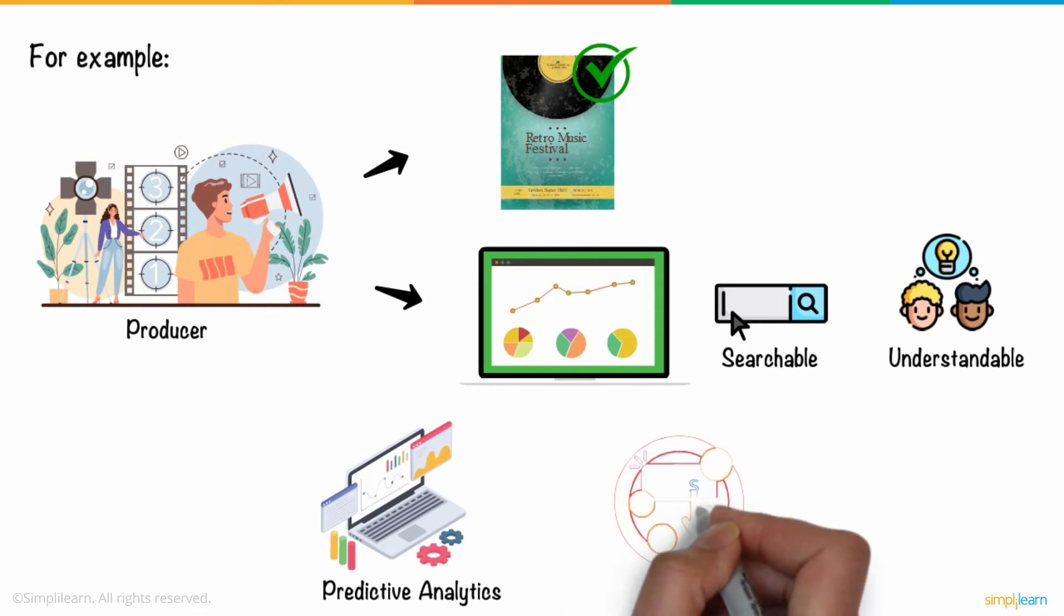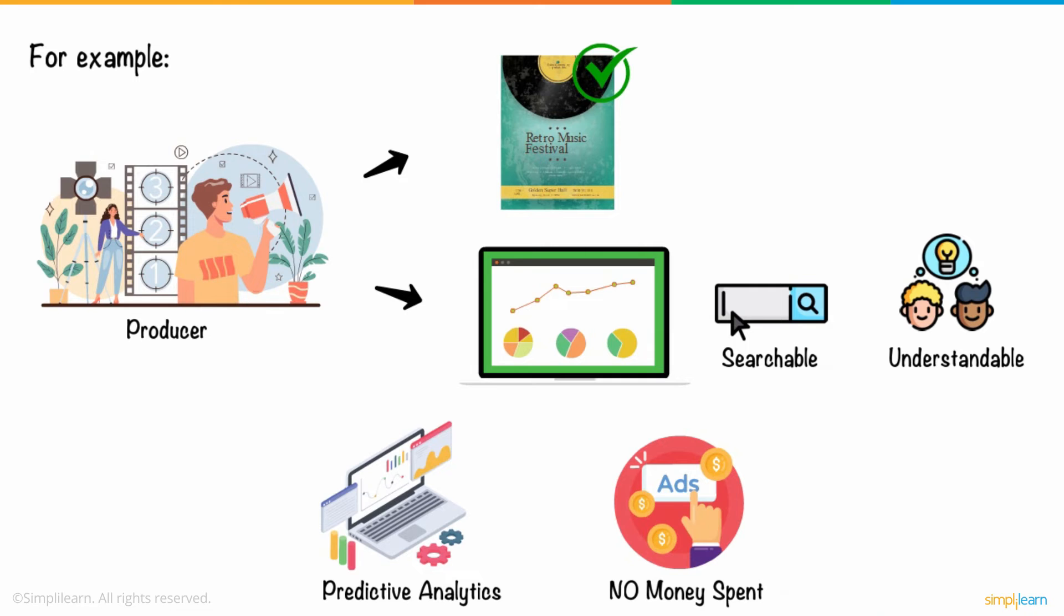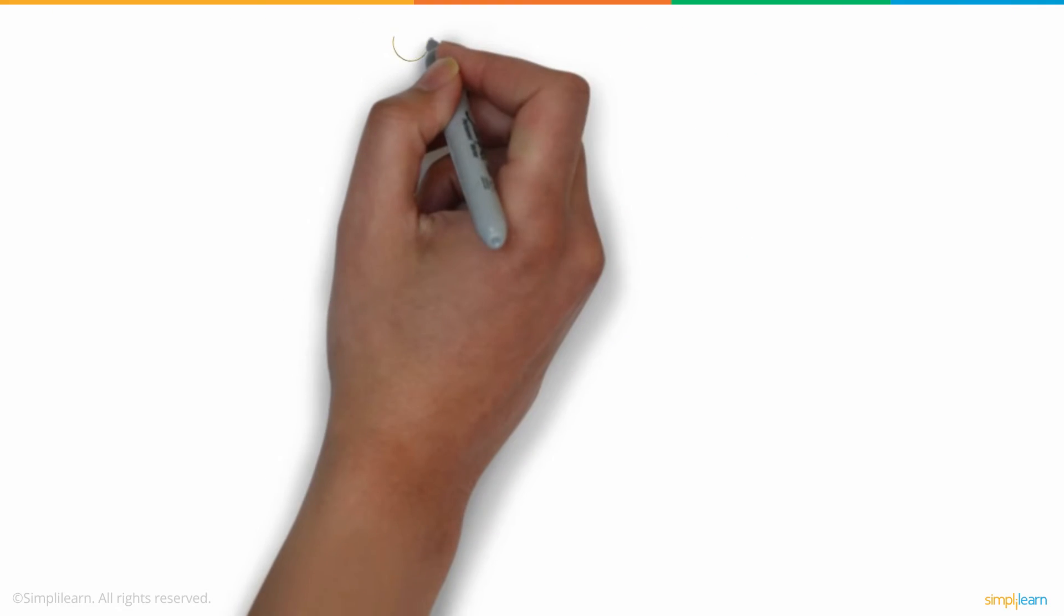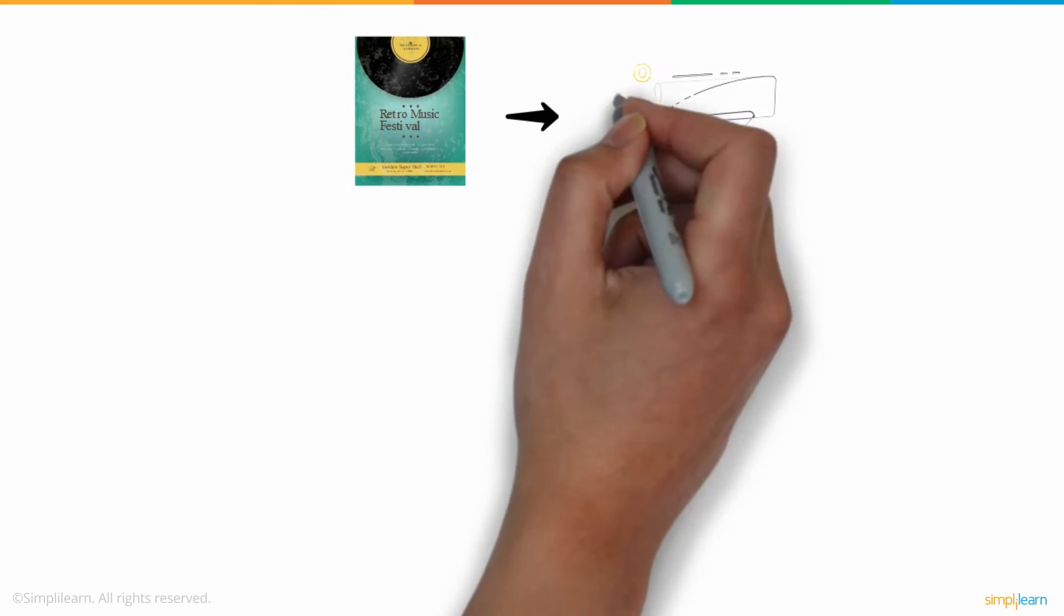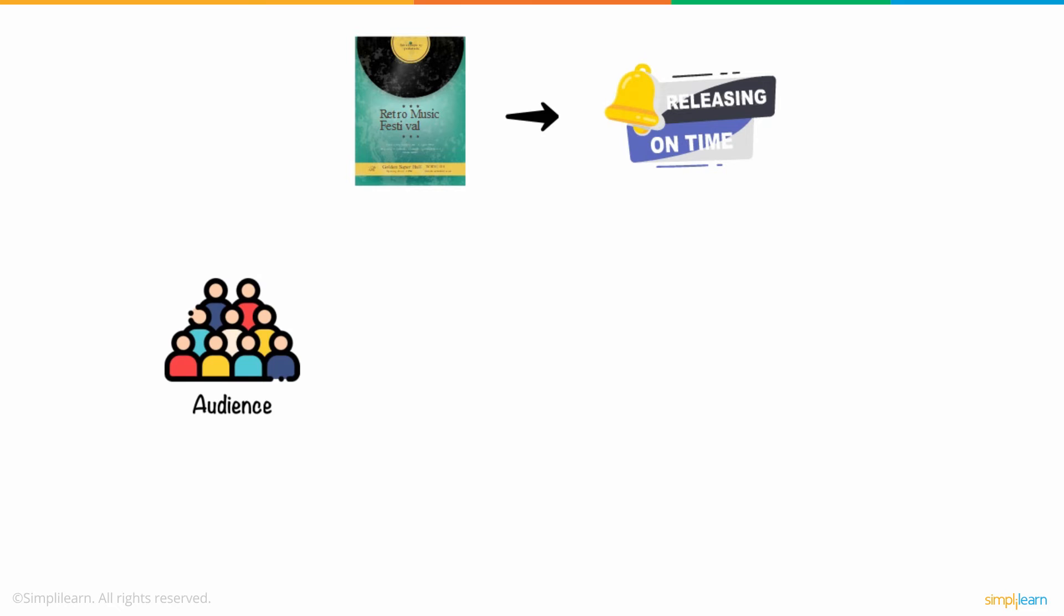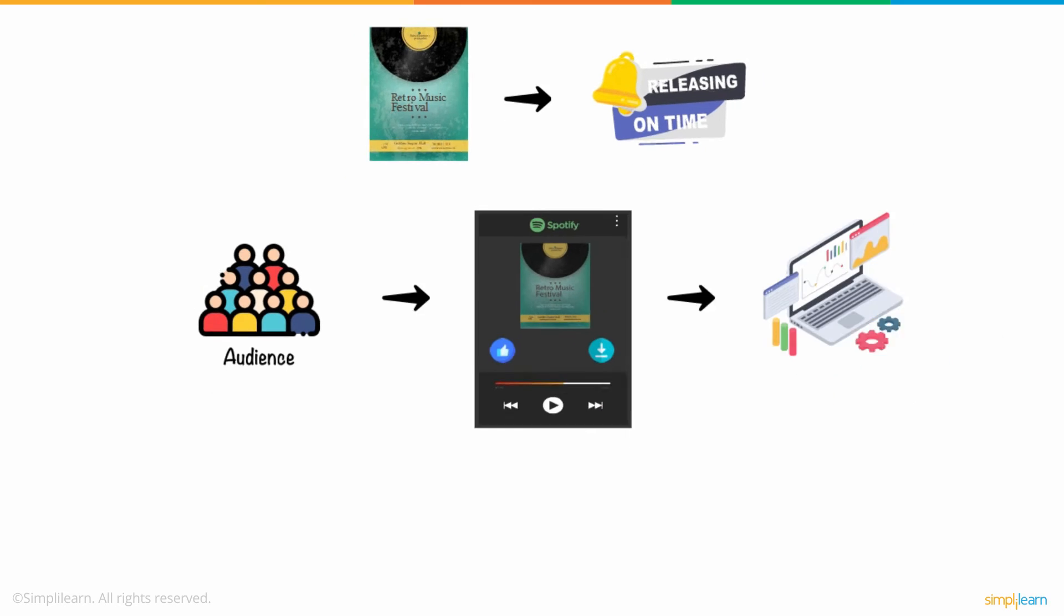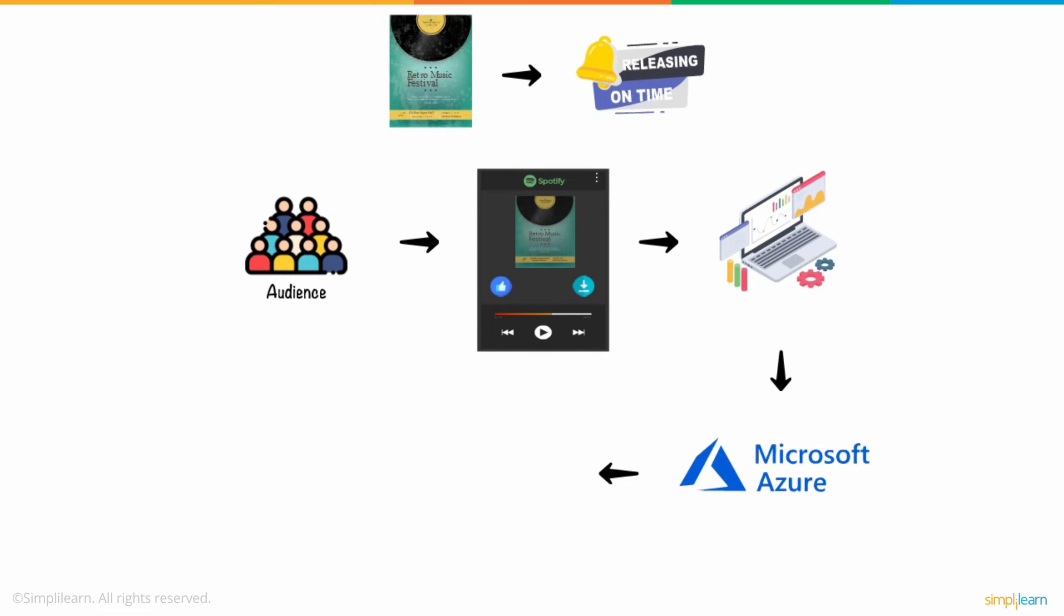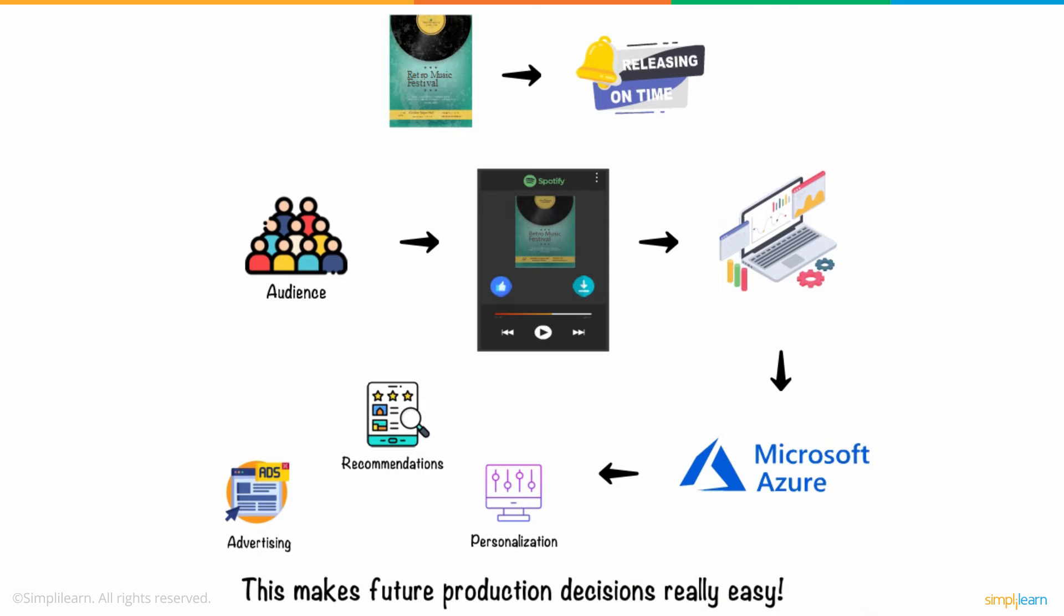Therefore, no ad dollars are wasted or seats are left empty. Secure distribution means album releases smoothly and on time. As soon as the audience starts watching and reacting to every interaction, Azure analyzes their viewing habits to drive recommendations, advertising, and personalization. This makes future production decisions really easy.